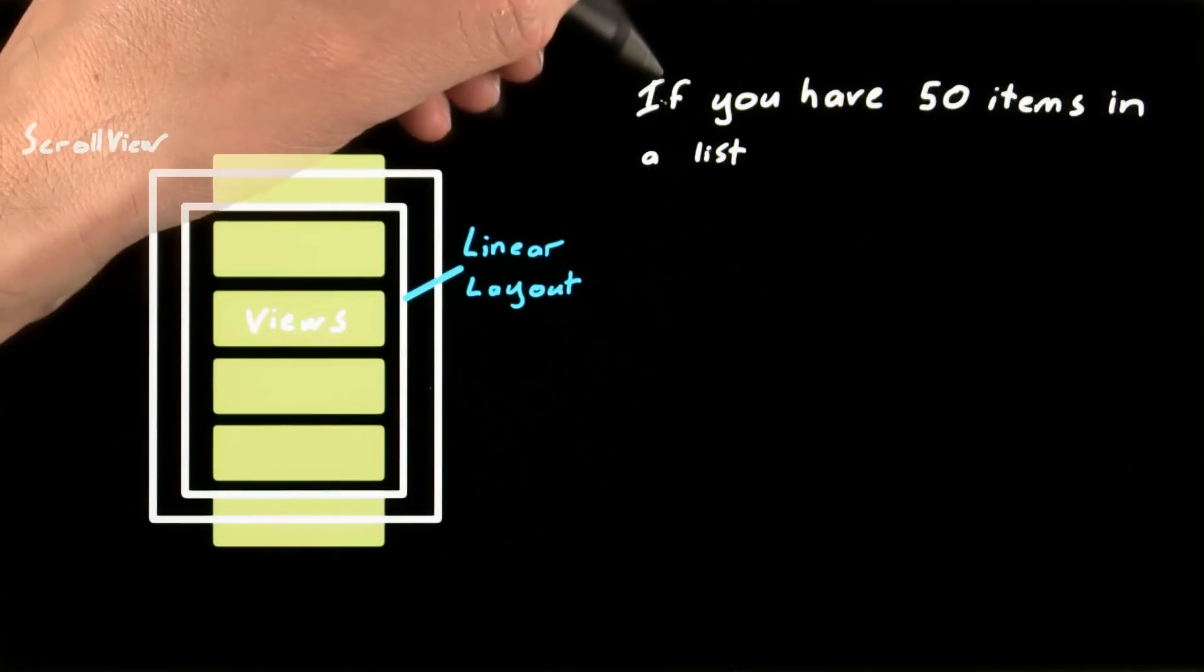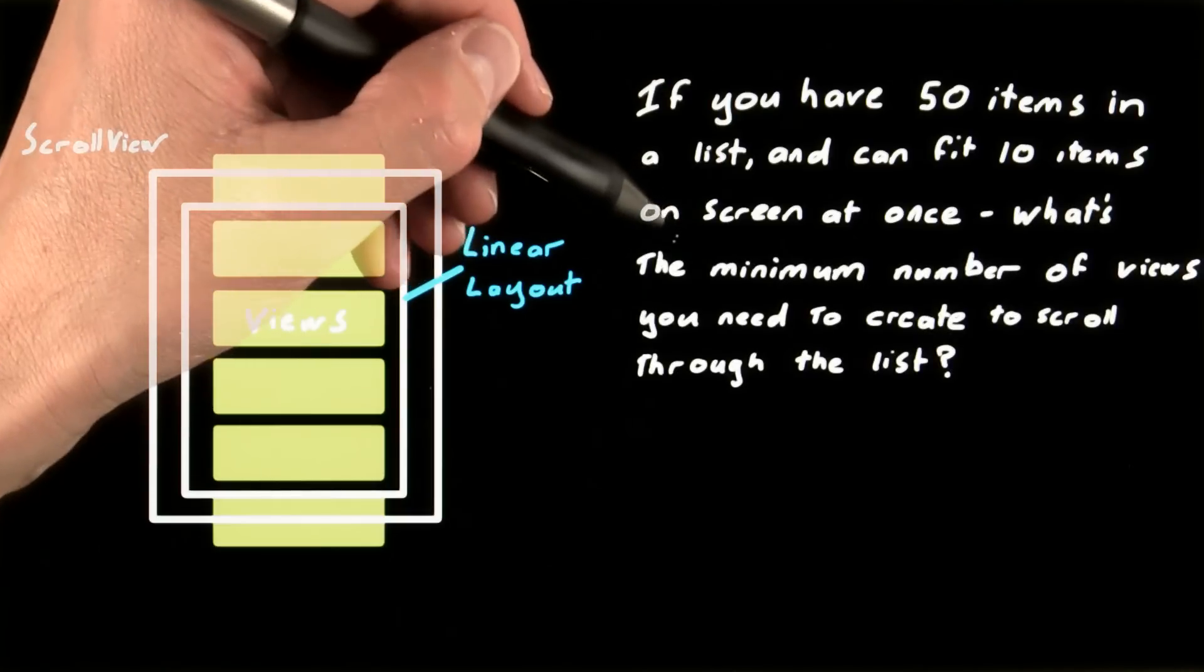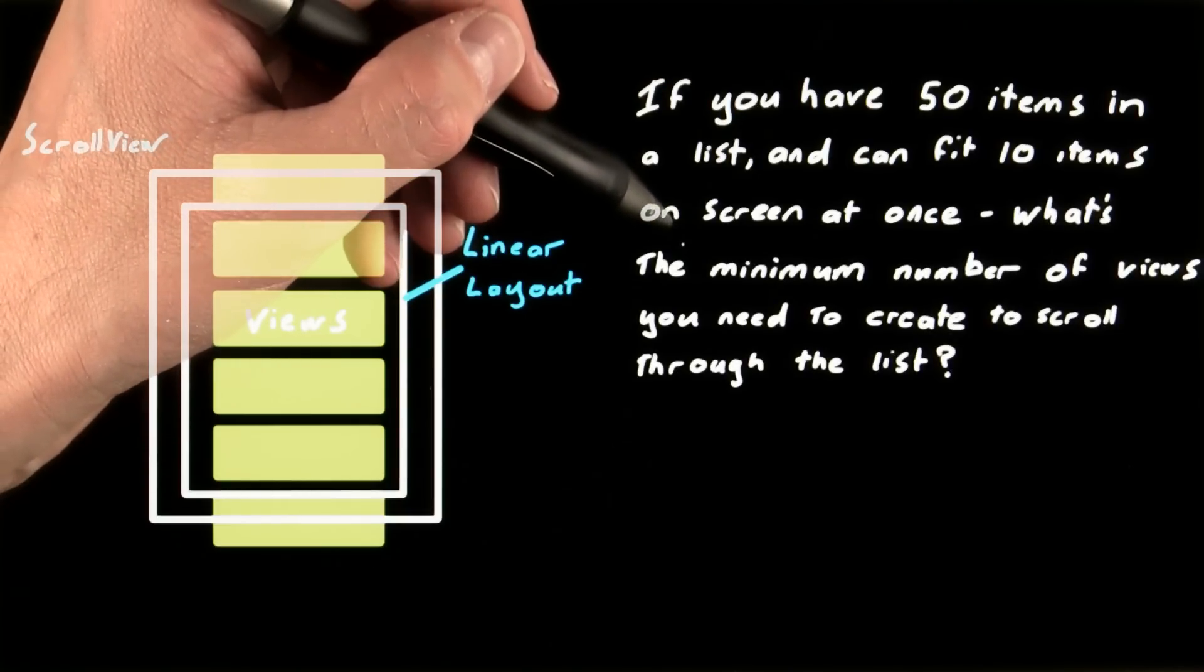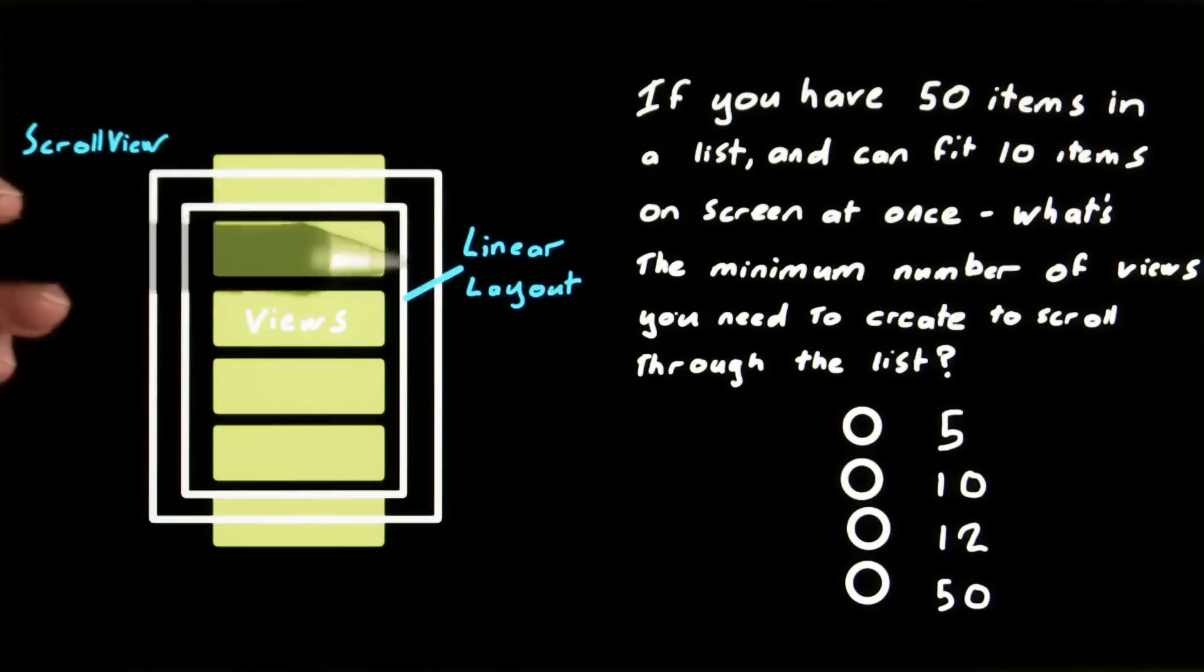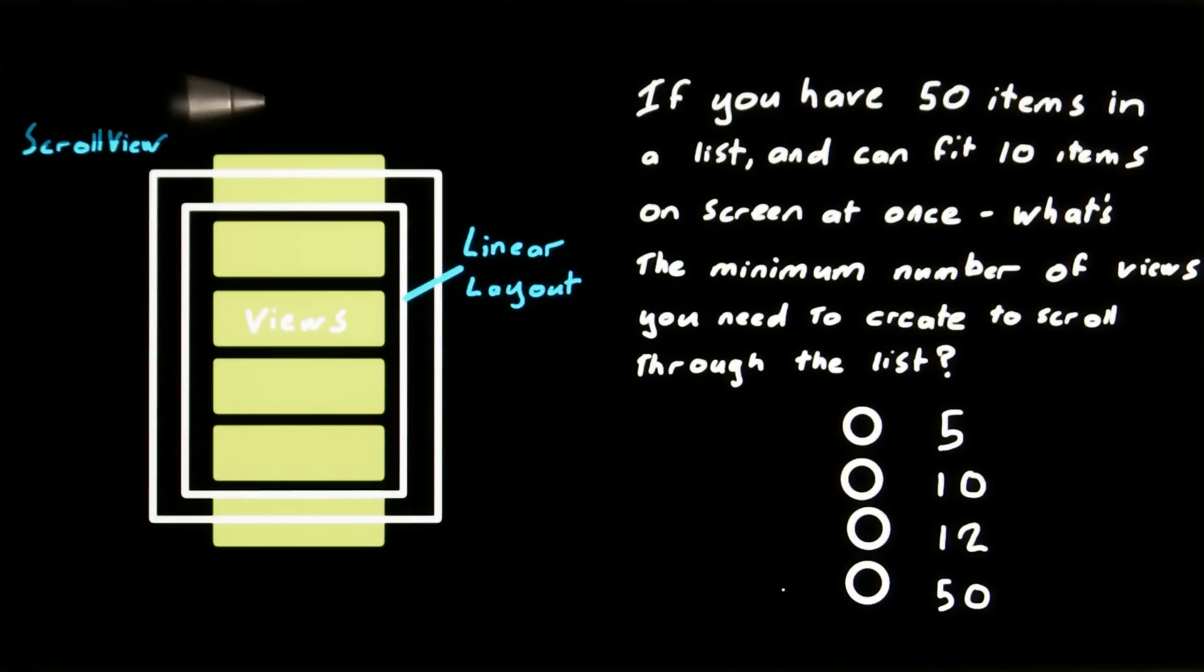If you have 50 items in a list and can fit 10 items on screen at any given time, what's the minimum number of views you'd need to create in order to scroll through every item on the list? The answer might not be immediately obvious, but think about ways in which you can be more efficient in your use of the views used to display the entire list.